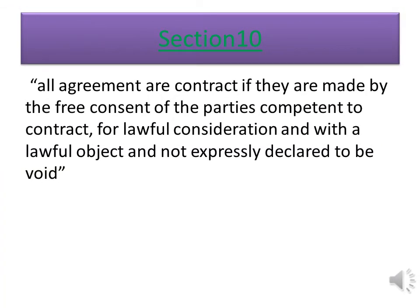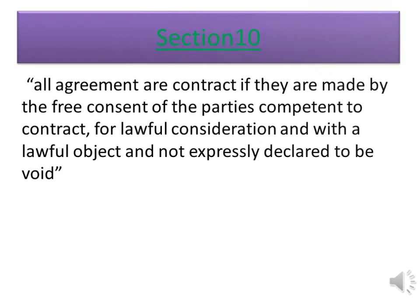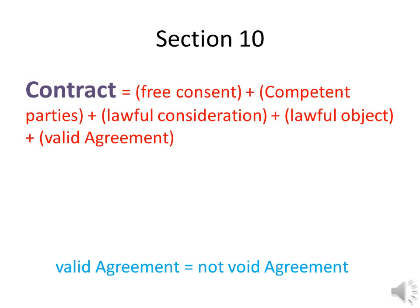According to Section 10, all agreements are contracts if they are made by the free consent of parties competent to contract, for lawful consideration and with a lawful object, and not expressly declared to be void. So in order to make a contract we need: free consent, competent parties, lawful consideration, lawful object, and a valid agreement.